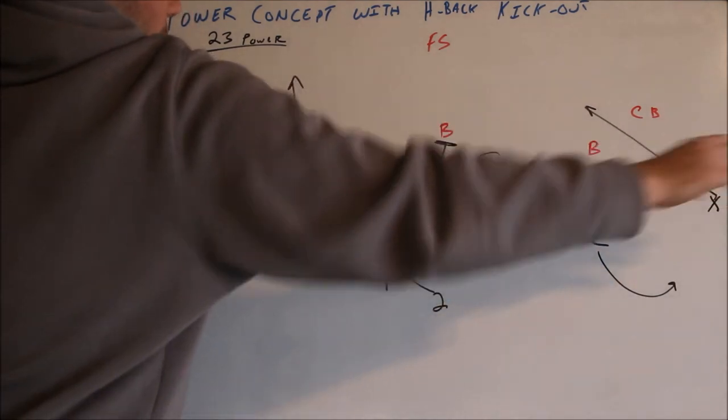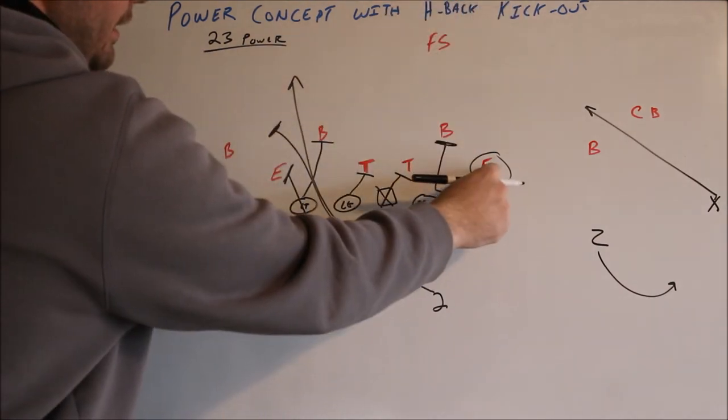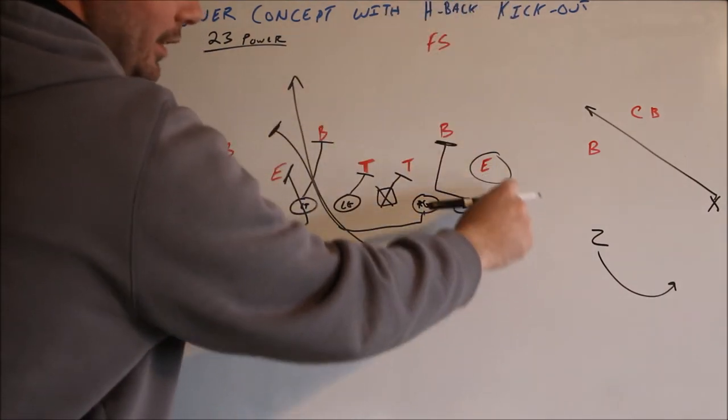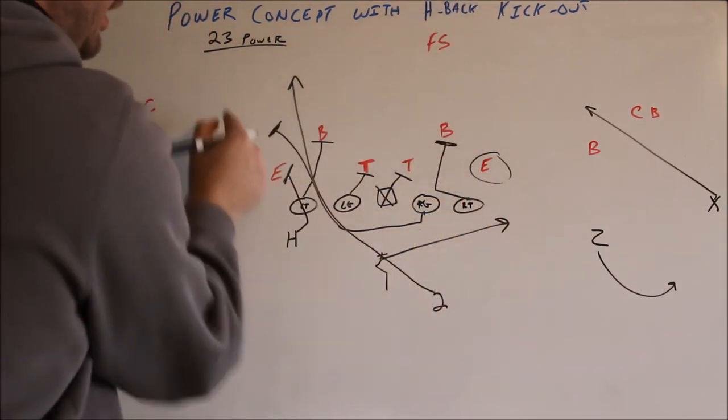The bubble should influence him to widen so you hit that seam. If the D end boxes or contains upfield, you could just give him the ball.